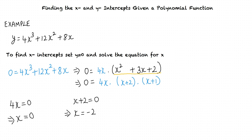Next, we have x plus 2 equals 0, which implies x equals negative 2. Finally, we have x plus 1 equals 0, which implies x equals negative 1.